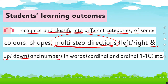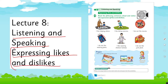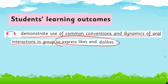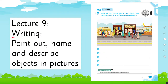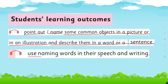We'll also cover numbers in words — cardinal and ordinal, 1 to 10. In Lecture 8, under Listening and Speaking, we'll learn to express likes and dislikes, and cover the SLO to demonstrate use of common conventions of oral interactions in a group. In Lecture 9, under Writing, we'll point out, name, and describe objects in pictures, and cover the SLO to use naming words in speech and writing.